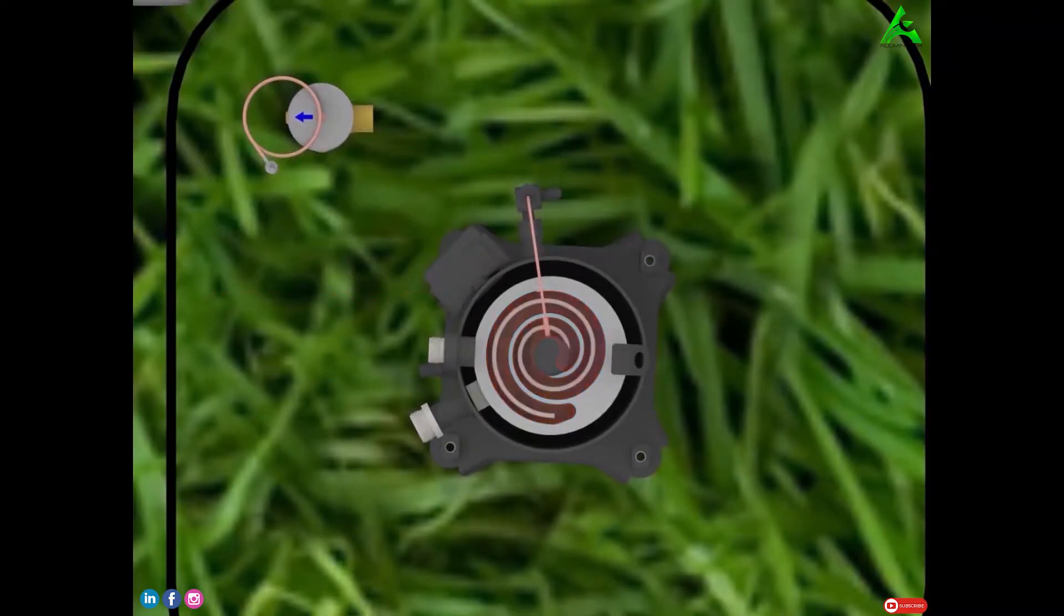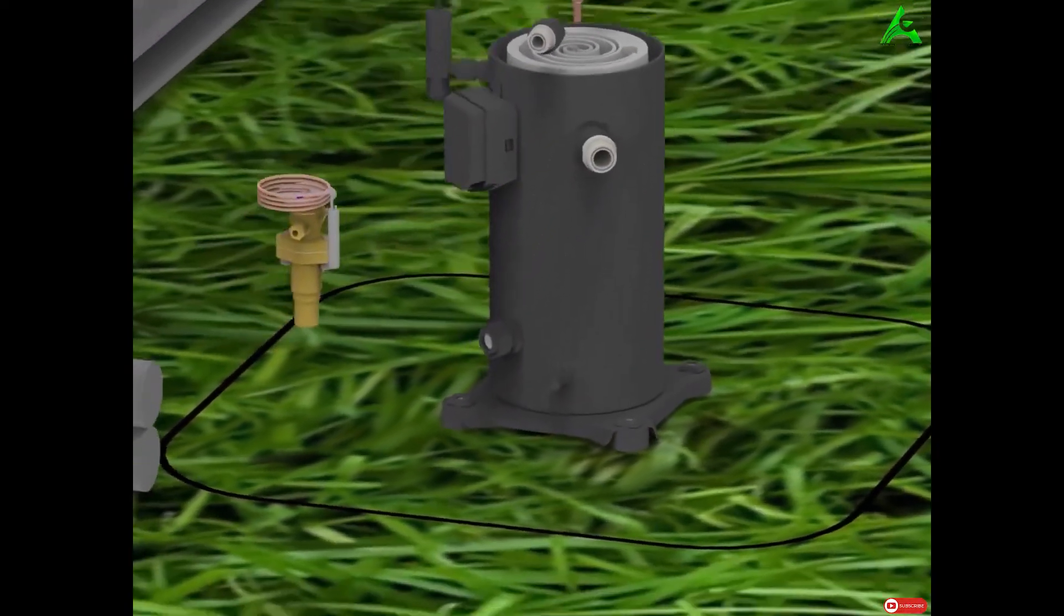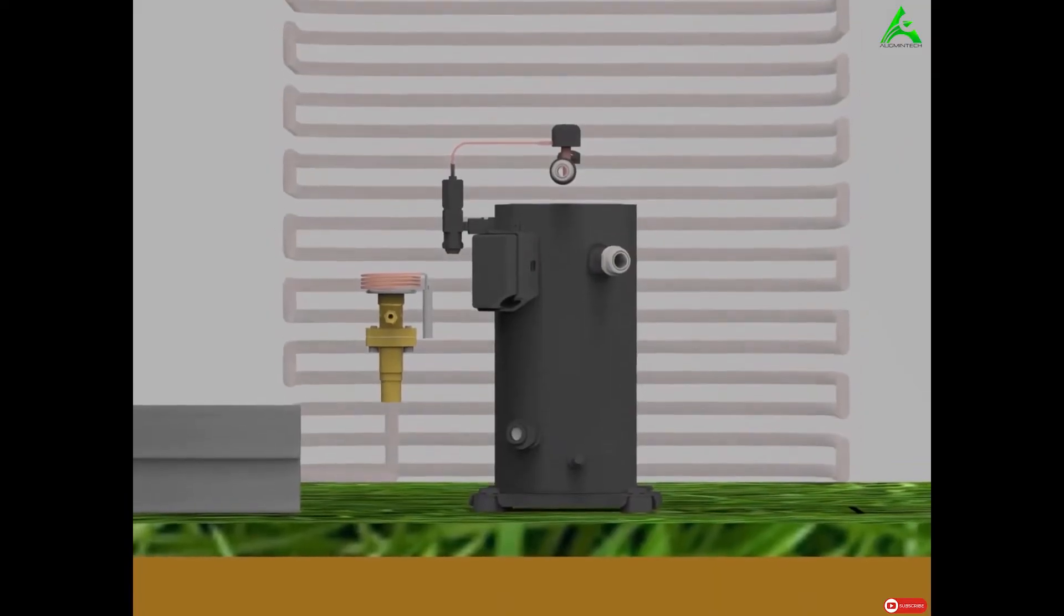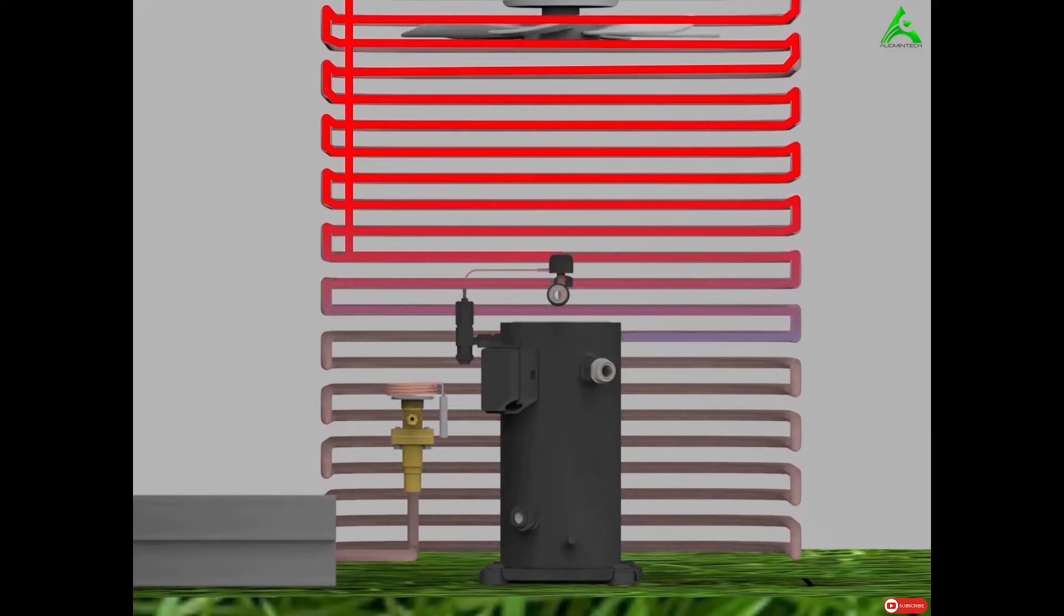Therefore, the refrigerant leaves the compressor as high temperature, high pressure vapor. It then flows through the condenser coils, where heat absorbed by the refrigerant in the evaporator and compressor is rejected, and it gets condensed to liquid.